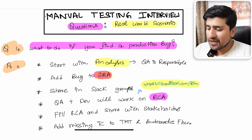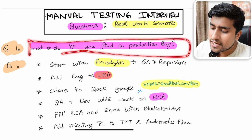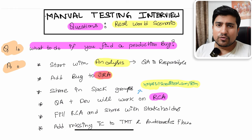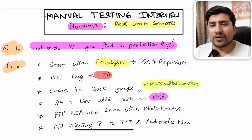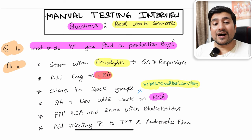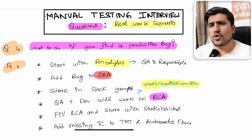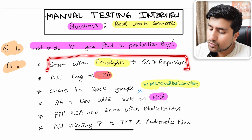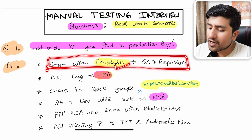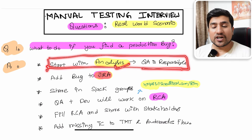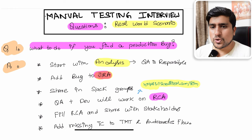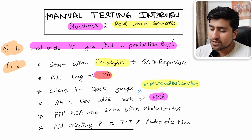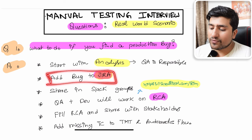The first question is: what do you do if you find a production bug? This is really important and interviewers ask it often. What are the expectations from a manual tester when there is a production bug? First of all, you have to do an analysis. QA is responsible for it — if you are a QA, it is your responsibility to go ahead and see why this P0 bug exists.